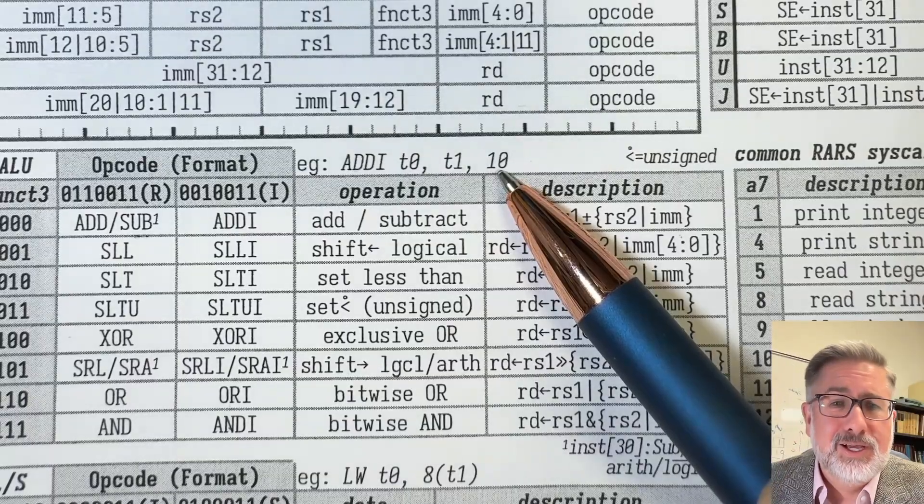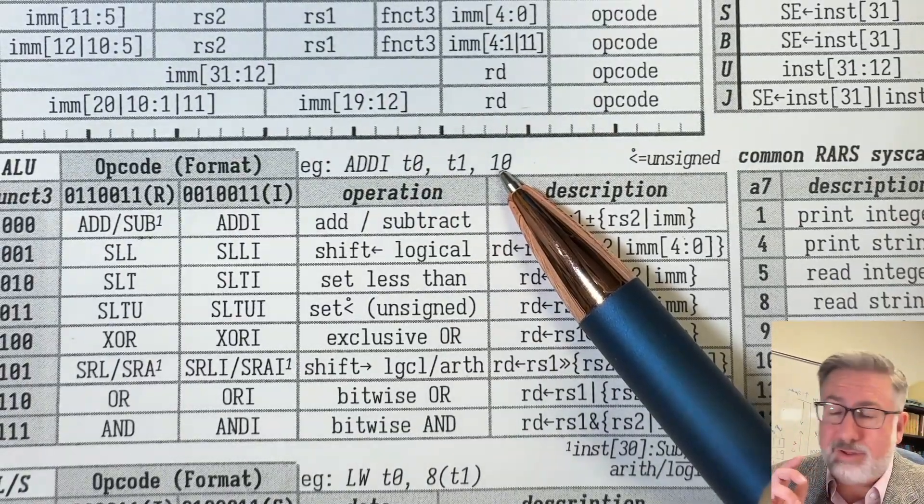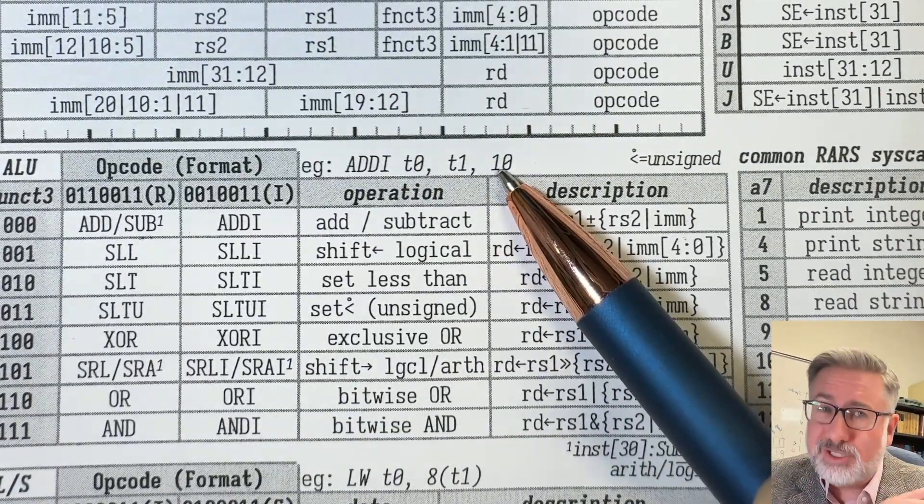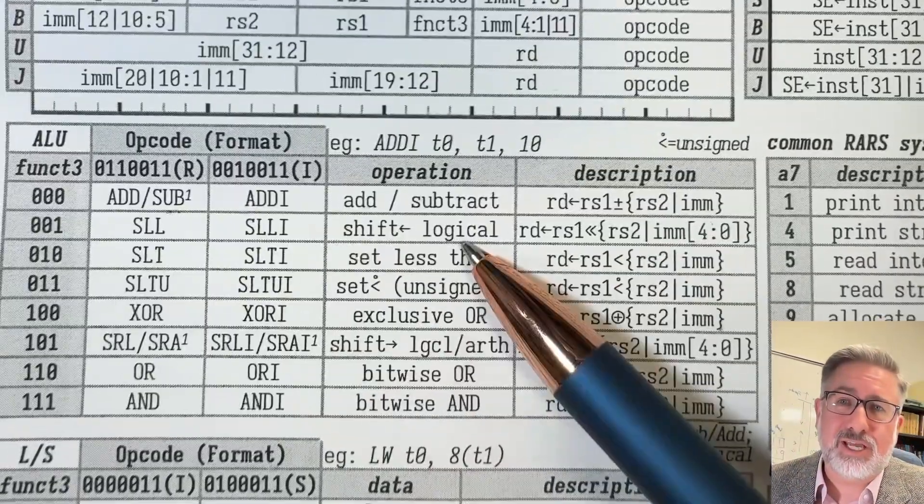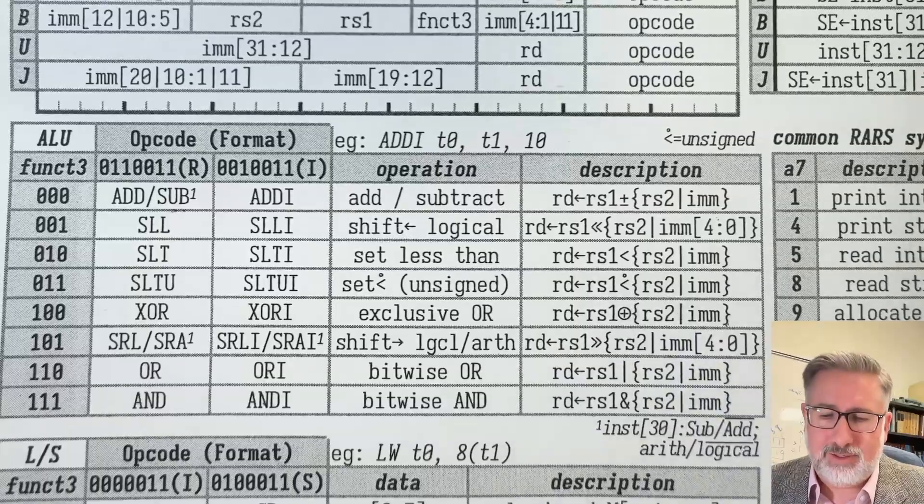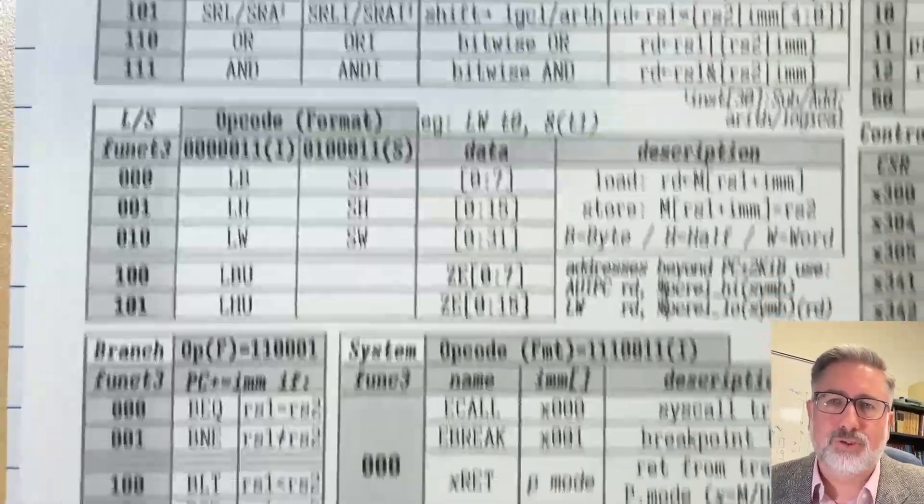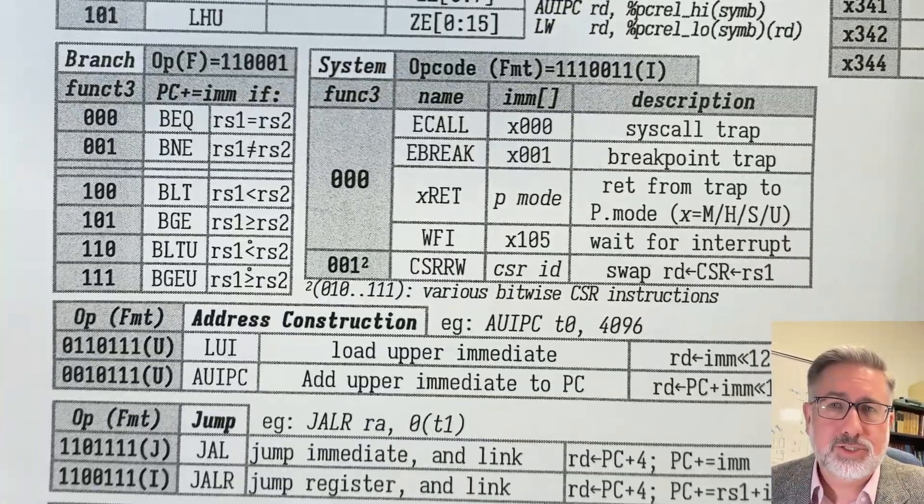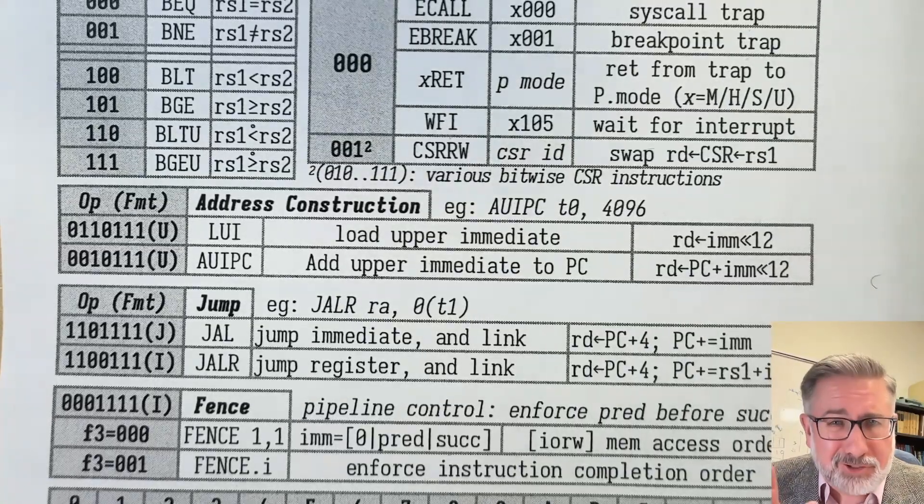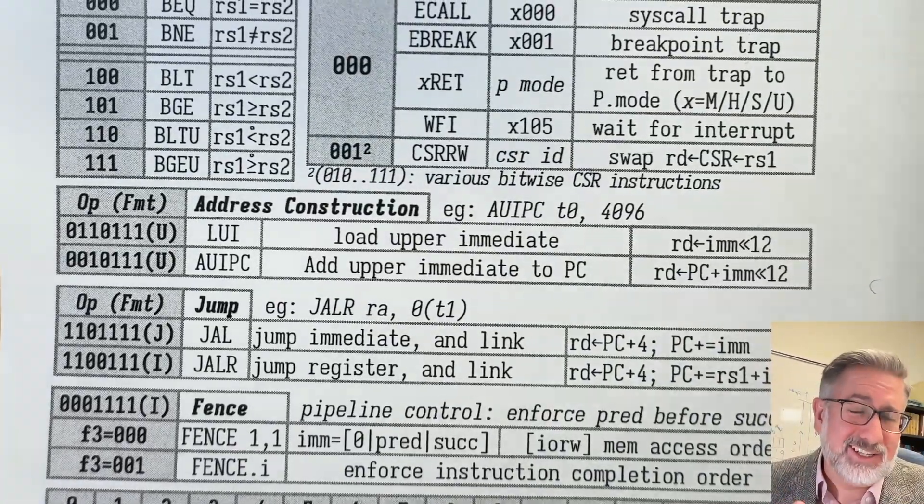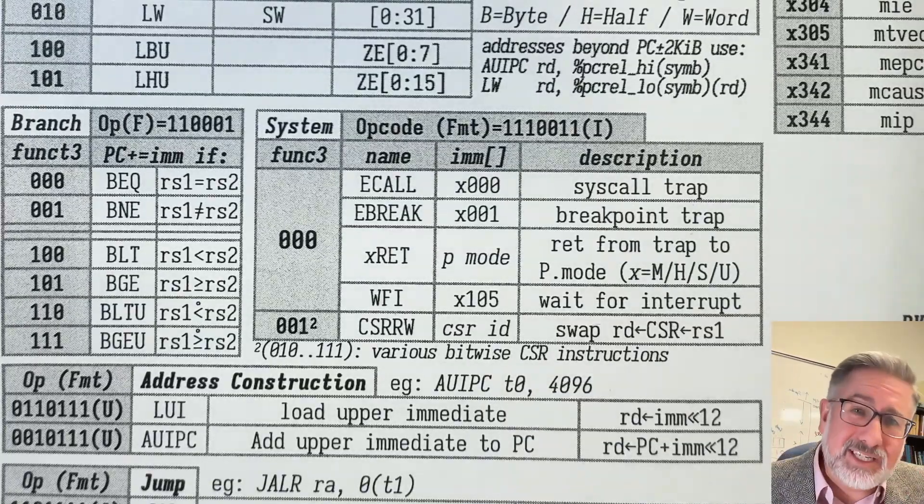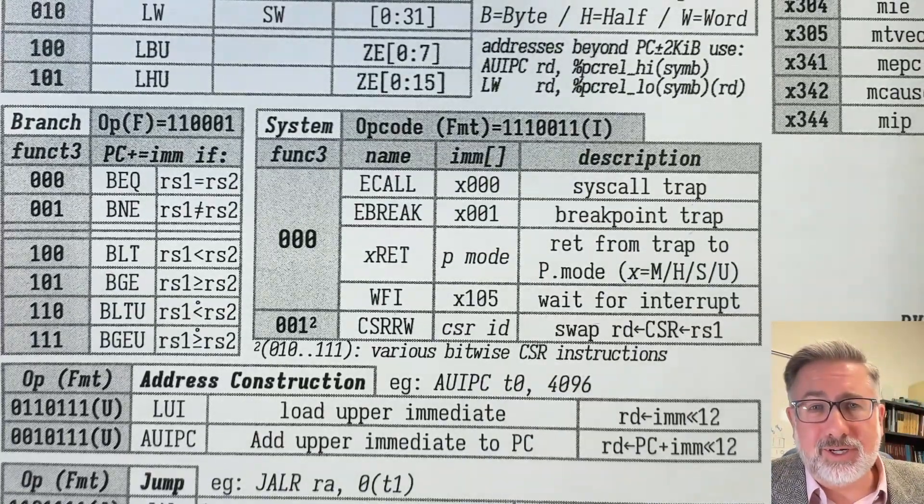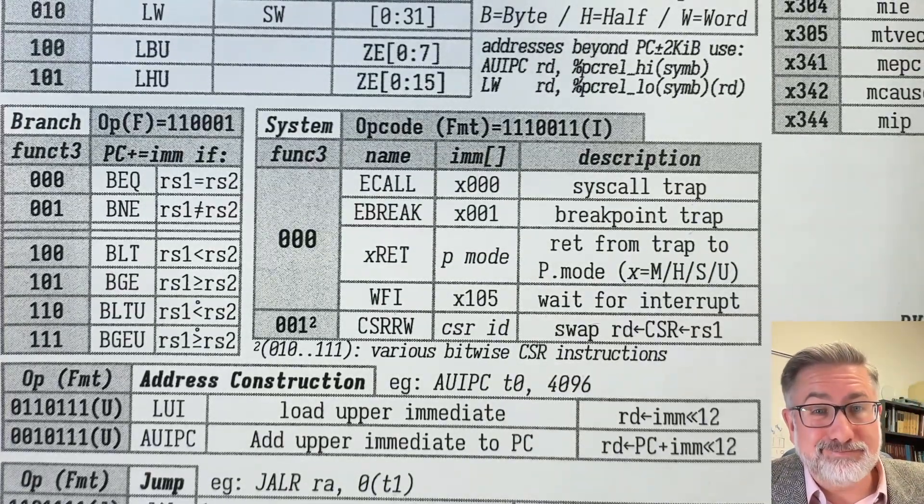So in subsequent videos, we'll look at the programmer model, which includes the register file and memory organization. We'll look at the immediate versions of these ALU operations. We'll look at everything else here. We've got the load store instructions. We've got branch system instructions and a few other little complications. Everything is like this - some simple stuff and some complicated stuff. But that gives you the basic introduction to what RISC-V is going to look like.